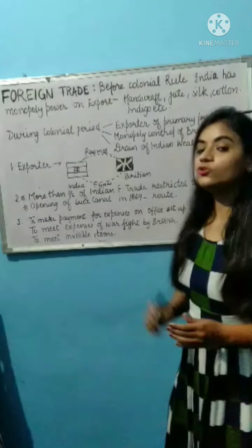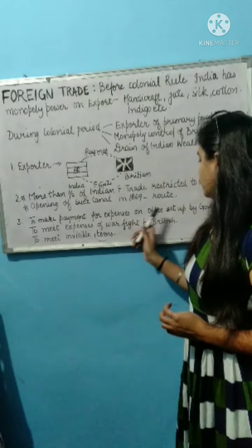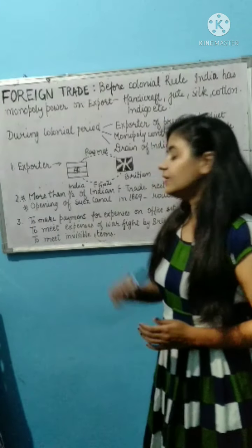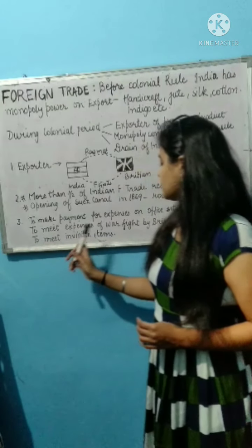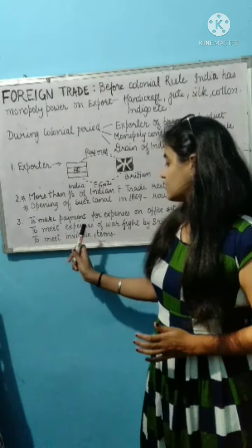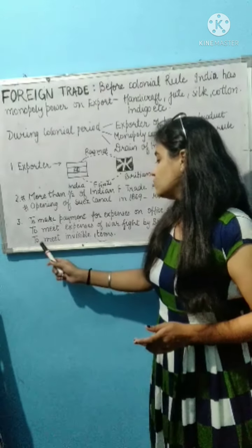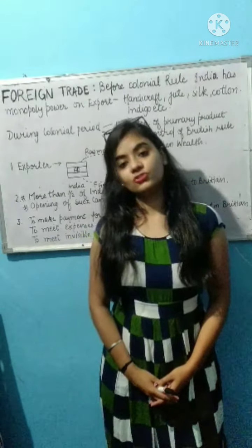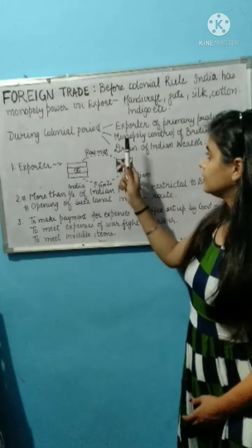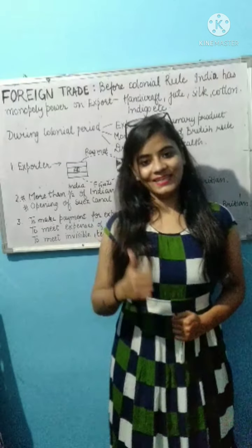The last point is drain of Indian wealth. Our Indian wealth was drained out. The reason was: to make payment for the expenses of the offices set up by the government in Britain, and to bear the expenses of the wars fought by the British. I hope this is clear to you — foreign exchange: exporter of the primary product, monopoly control of the British rule, and drain of Indian wealth. That's all for today. Thank you. If you like my video, please give a thumbs up. Have a nice day.